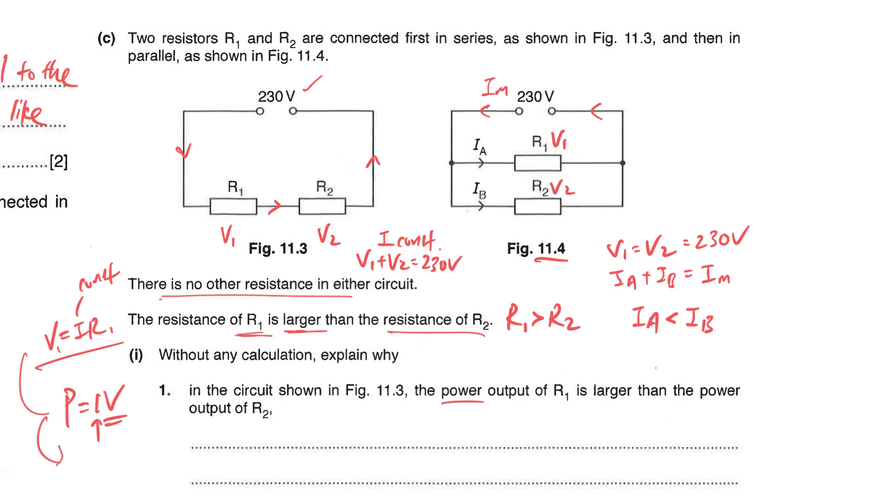A better way is to use power equals to I squared R that you have learned. To answer part one, let's tell the marker, explain to the marker that you understand R1 and R2 they are connected in series therefore the current flowing through both will be constant. Then using power equals to I square R, always state the formula and the relationship. Since I is constant, so what you have is power is directly proportional to your R.